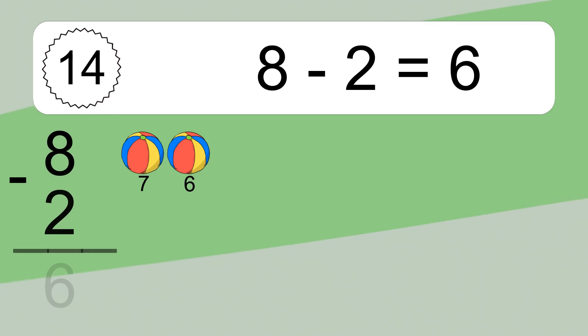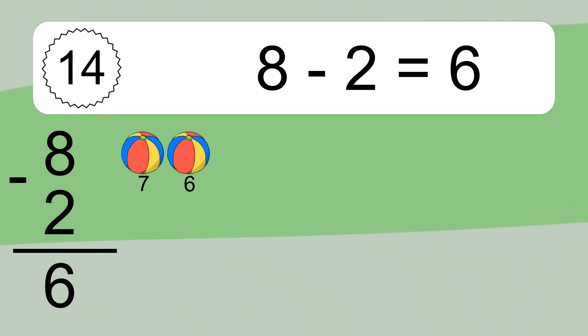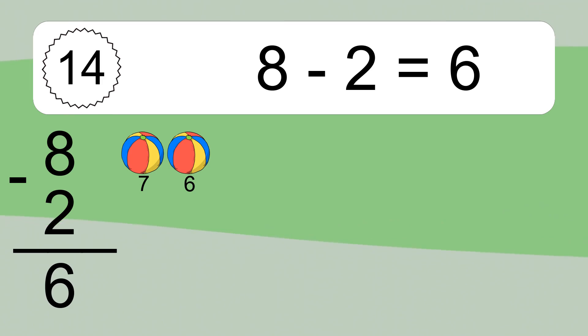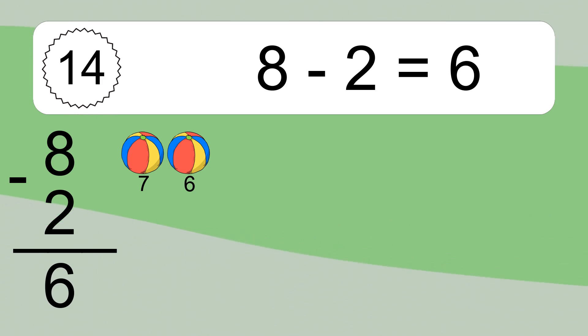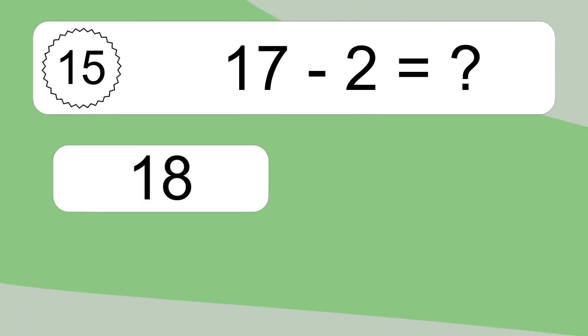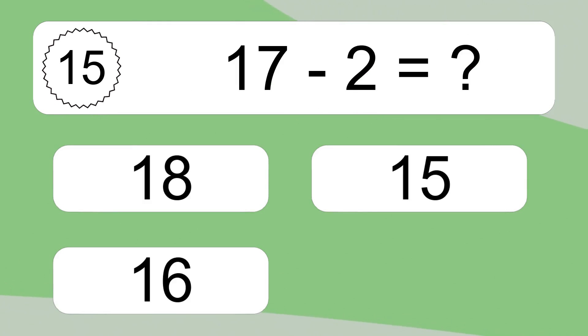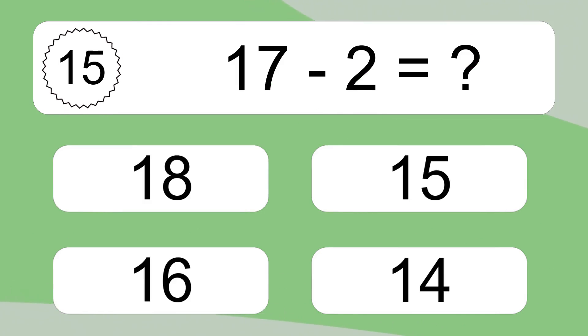8 minus 2 equals what? 8 minus 2 equals 6. Let's count it: 7, 6.